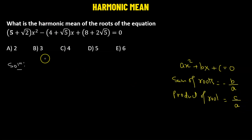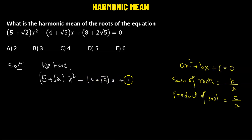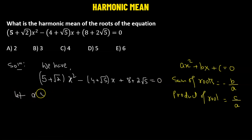In our case, we have the quadratic equation: (5 + √2)x² minus (4 + √5)x plus (8 + 2√5) equals zero. So the coefficient of x² is (5 + √2), the coefficient of x is negative (4 + √5), and the constant term is (8 + 2√5). We suppose this quadratic equation has two roots, alpha and beta.